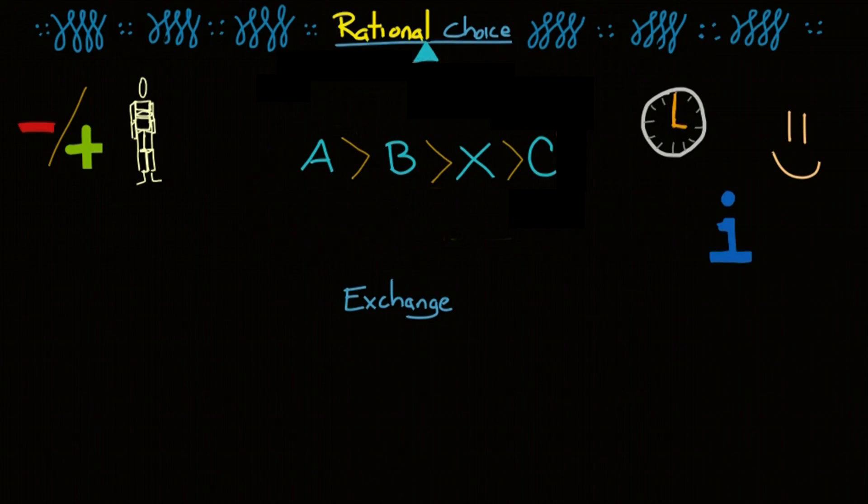These three assumptions result in a consistent, rankable set of possible actions. Alright, so now that we have an idea of rational choice theory, let's take a look at exchange theory.